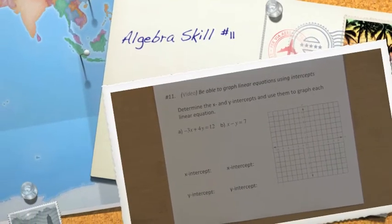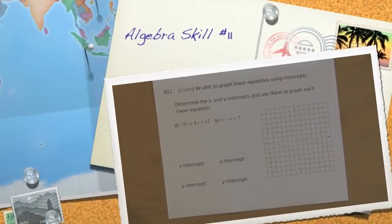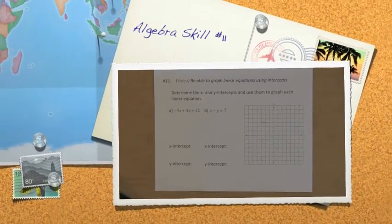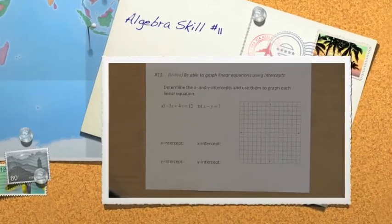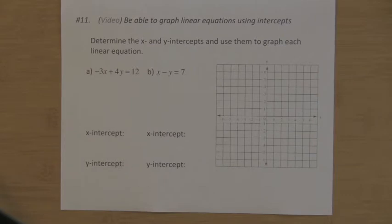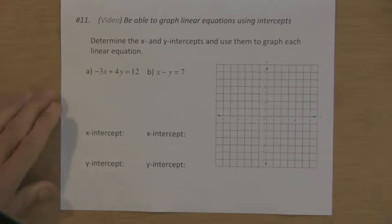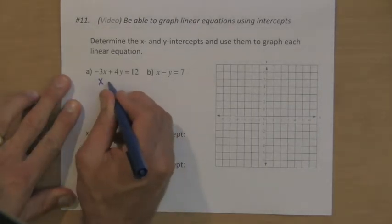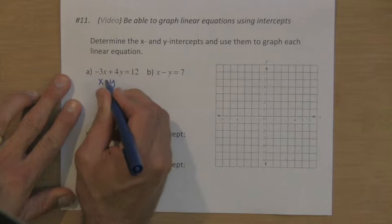Skill number 11: graphing linear equations using intercepts, in particular the x and y intercepts, as easy points to calculate and use to graph these linear equations as lines. You can make an xy table, or an in-out table, and just find these two key points.